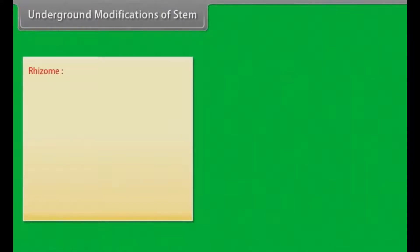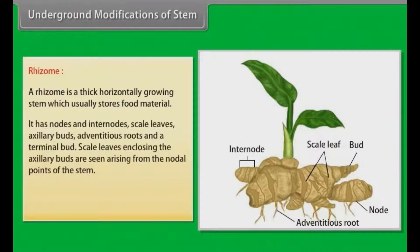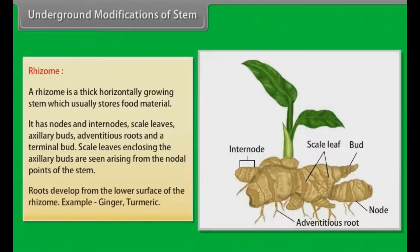A rhizome is a thick horizontally growing stem which usually stores food material. It has nodes and internodes, scale leaves, axillary buds, adventitious roots and a terminal bud. Scale leaves enclosing the axillary buds are seen arising from the nodal points of the stem. Roots develop from the lower surface of the rhizome. Examples: ginger, turmeric.